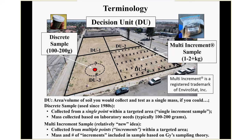A discrete sample — started by the U.S. EPA in the 1980s — is a sample collected from a single point within a targeted area, a single increment sample. The mass collected is usually 100 to 200 grams based on what the laboratory needs. A multi-increment sample, in contrast, is a relatively new idea in the environmental industry, though they've been using this approach in agriculture and mining for decades. A multi-increment sample is a single sample collected from multiple points — each point we call an increment — within the targeted area. The mass and number of increments are based on G's sampling theory.